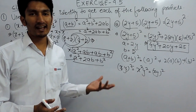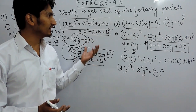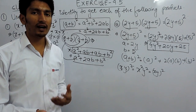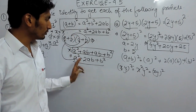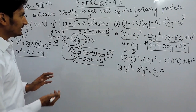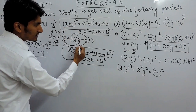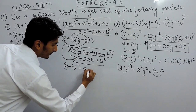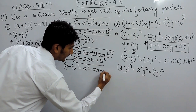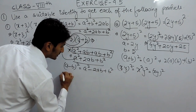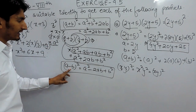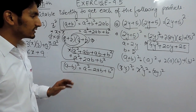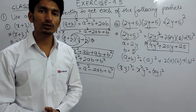We can use similar identities — there are two or three more identities that help solve these kinds of questions, and in the next video we will use them directly. Also, if the sign is negative, the same procedure applies and (a − b) whole square becomes a square minus 2ab plus b square. I hope you have understood how this identity is formed. Thank you.